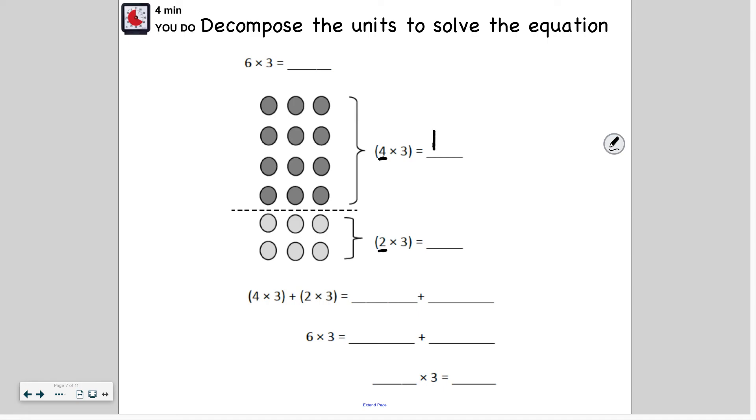So four times three, I already know that that's 12. I told you earlier, that's a fact that I've already learned on Reflex. And the same with two times three. So that really helps because these are easier facts than six times three. So the next thing I should have done was add 12 plus six, because that represents four times three plus two times three. And these combined would represent six times three. So 12 plus six gives me 18 when I add it. That means that six times three is 18.